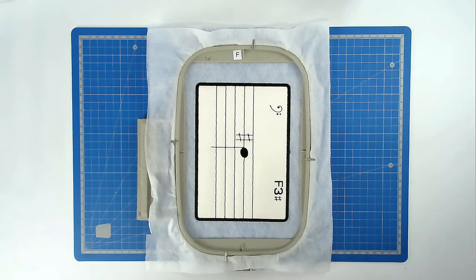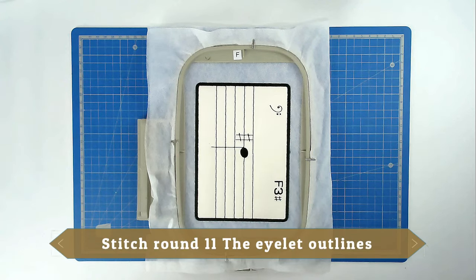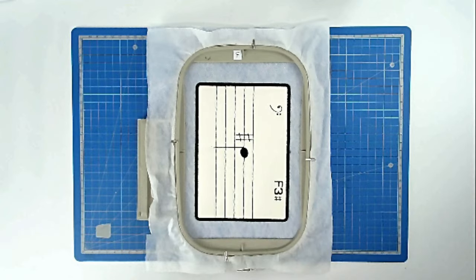If you're not making bunting with your panel, you can now stop here. If you are, you're now going to stitch round number 11. And that's the eyelets.